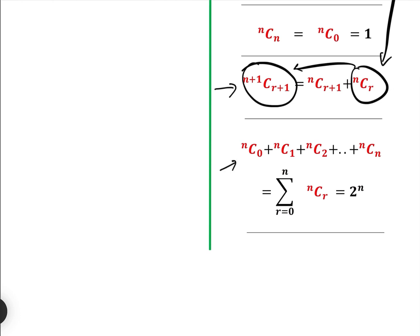And this final one here, that the sum of all of the combinations, nC 0 and nC 1, and so on, add nC n, which is the sum between r equals 0 and n of nCr, is equal to 2 to the n.